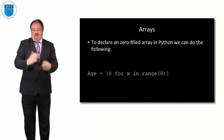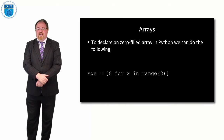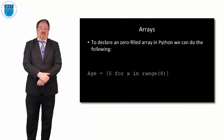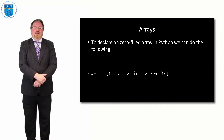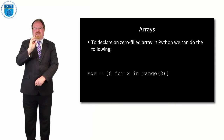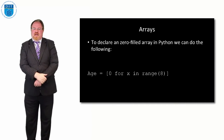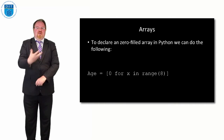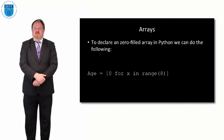If I want to declare an array with just zeros in Python, I say: age = [0 for x in range(8)]. There are actually multiple ways to declare an array in Python, but for what we're doing this is the best way. In actuality, in Python you don't normally declare empty arrays — you normally instantiate or fill them up straight away, putting values in almost immediately.